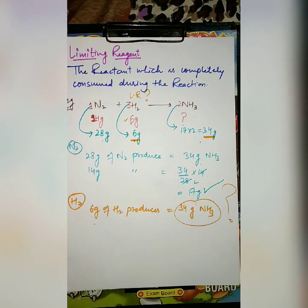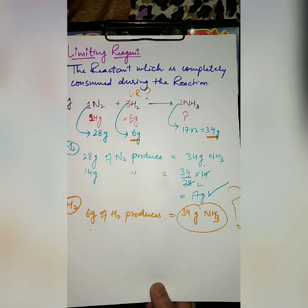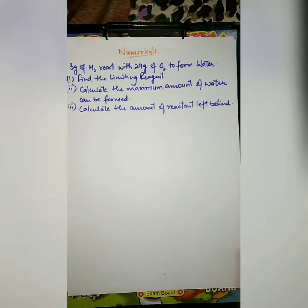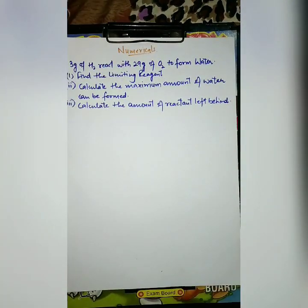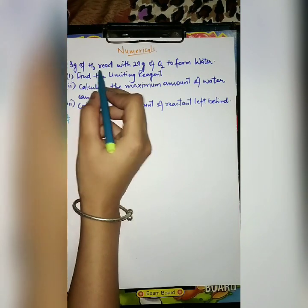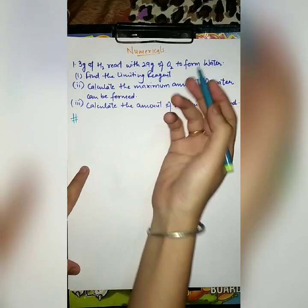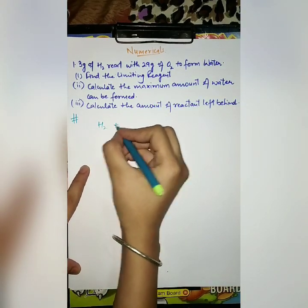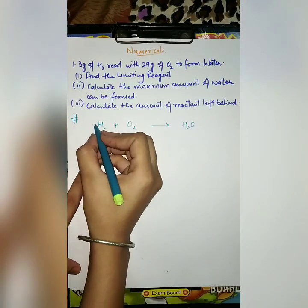There is a particular criteria to decide which one is the limiting reagent. Let us solve a numerical to make this very clear. Here is the statement: read it and try to solve it with me. 3 grams of hydrogen reacts with 29 grams of oxygen to form water. The reaction is hydrogen reacting with oxygen to produce water. Let us balance this reaction.